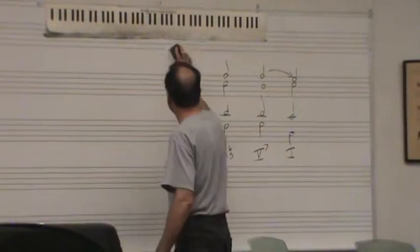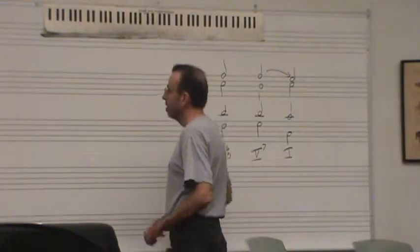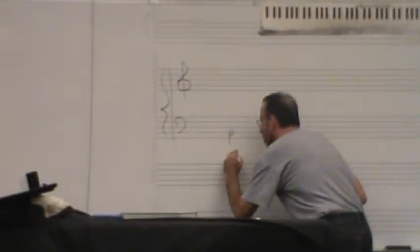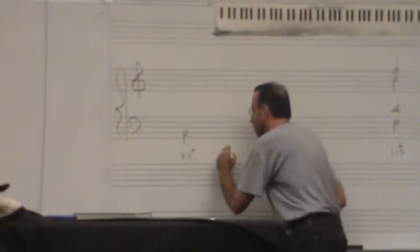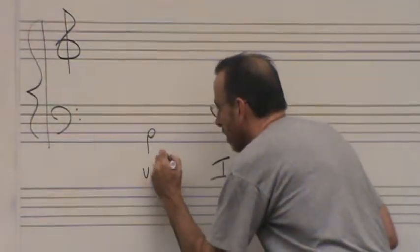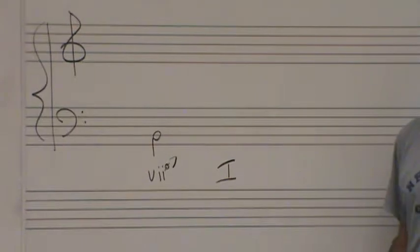Now the 7 half diminished - remember the 7 chord functions usually as a leading tone to tonic. And so the 7 half diminished 7 is going to function similarly.